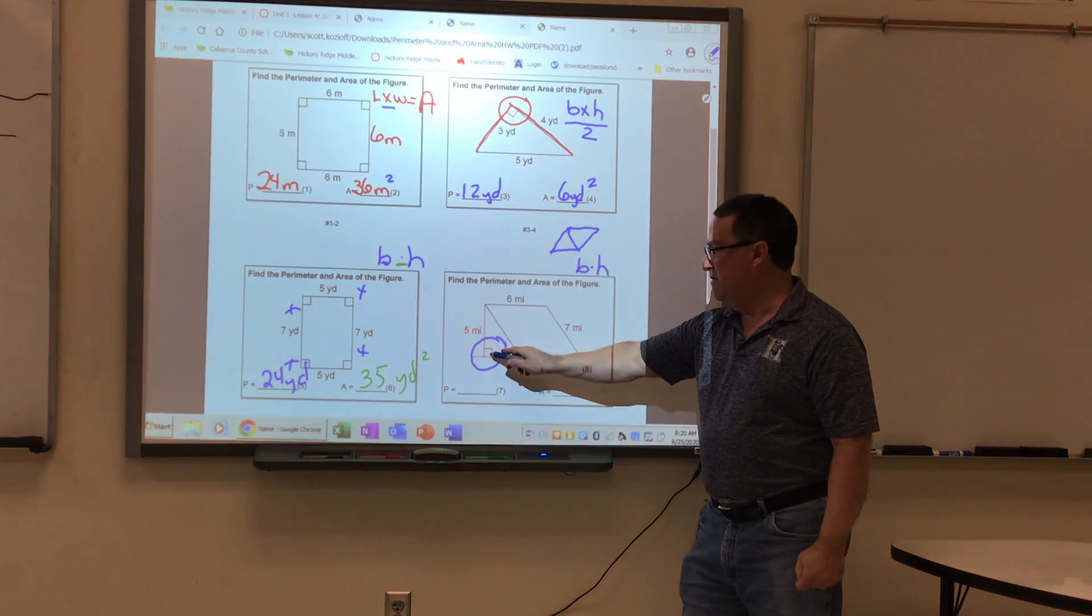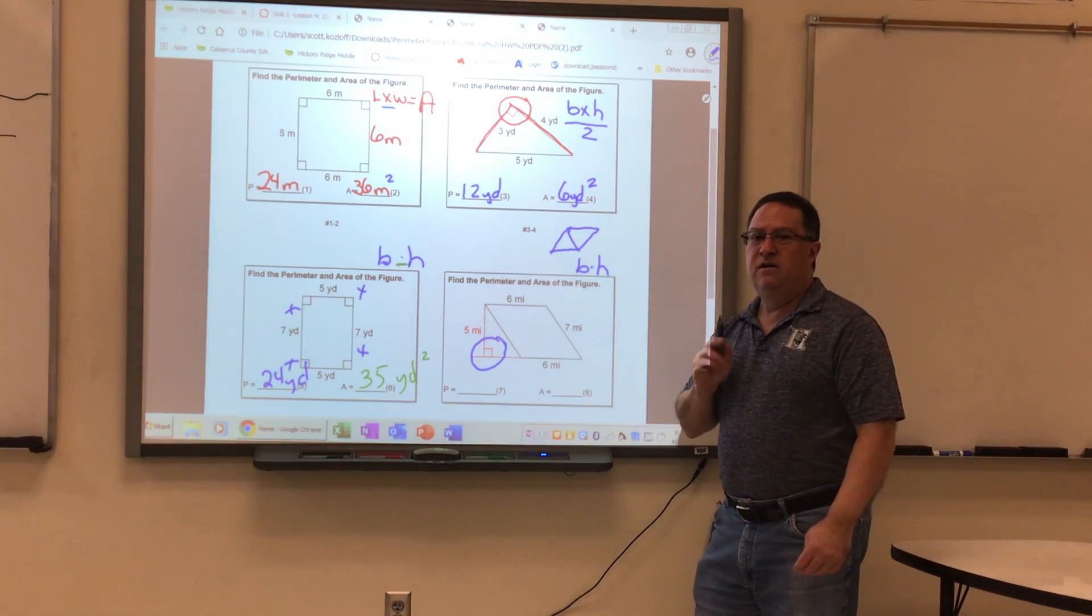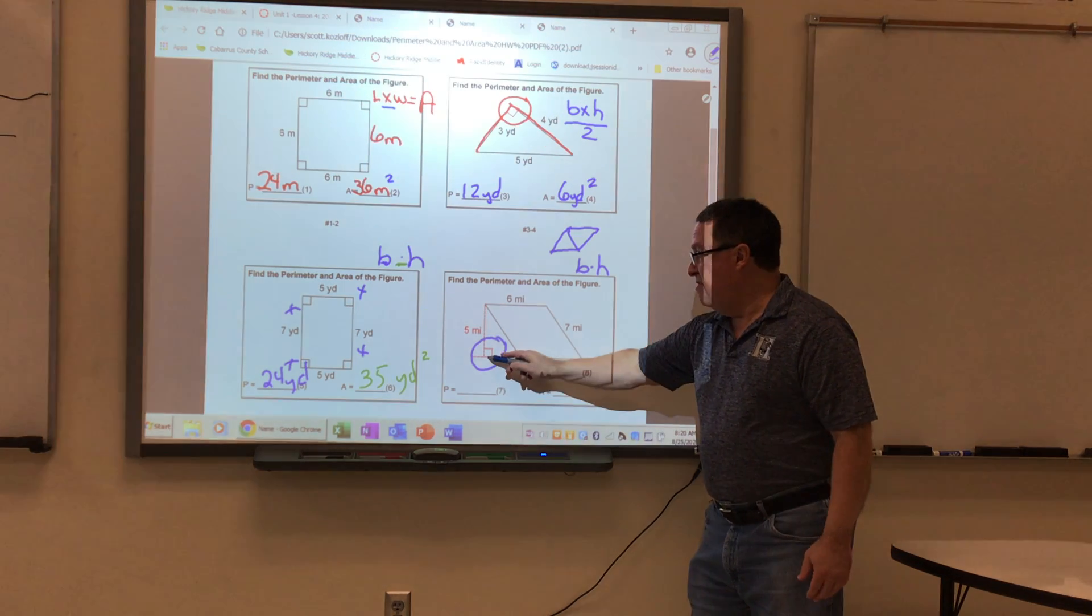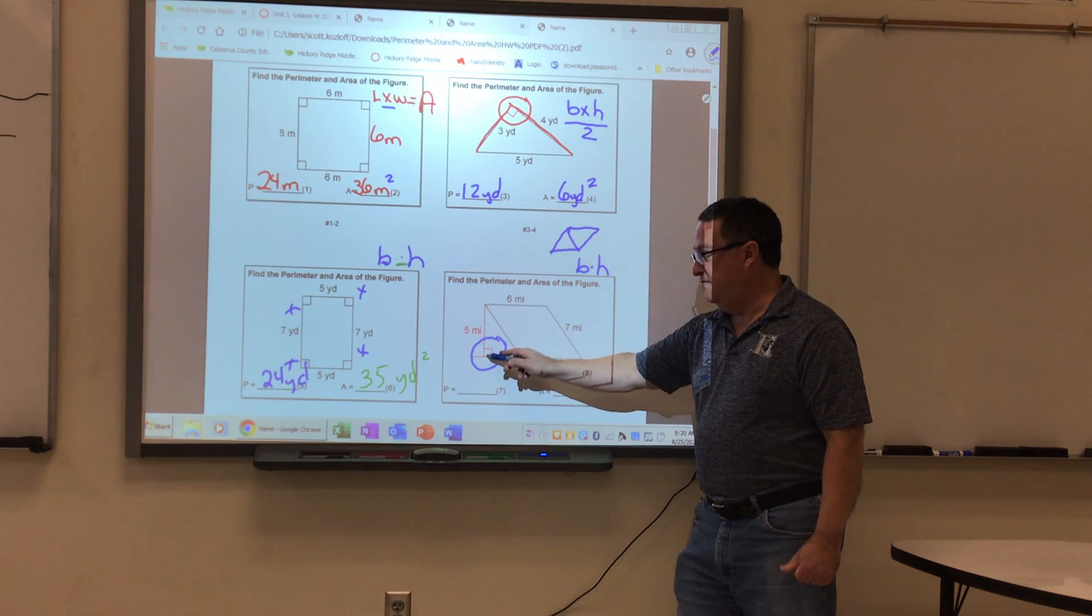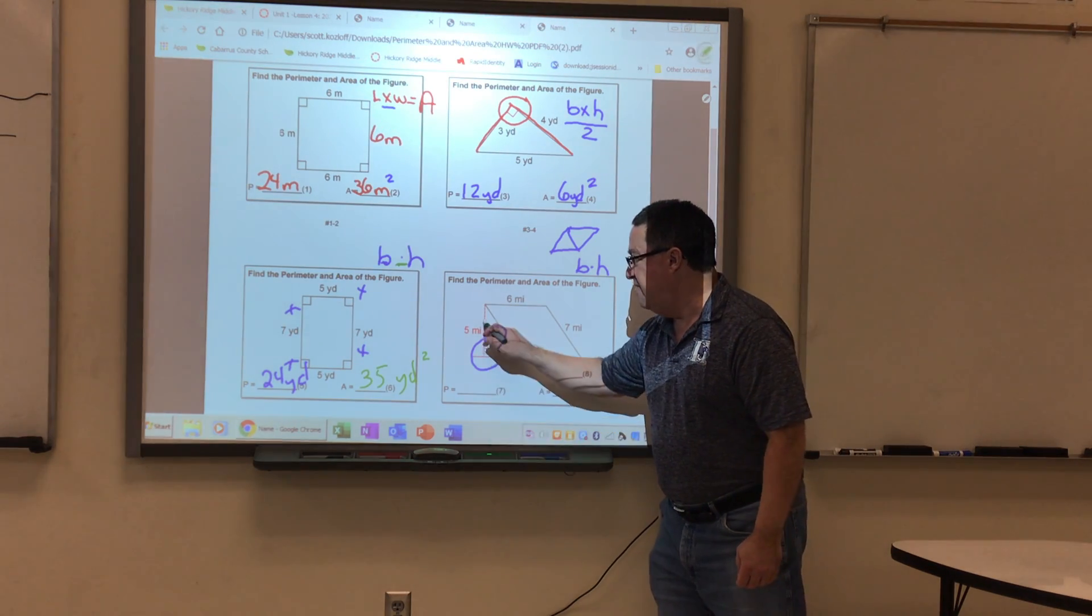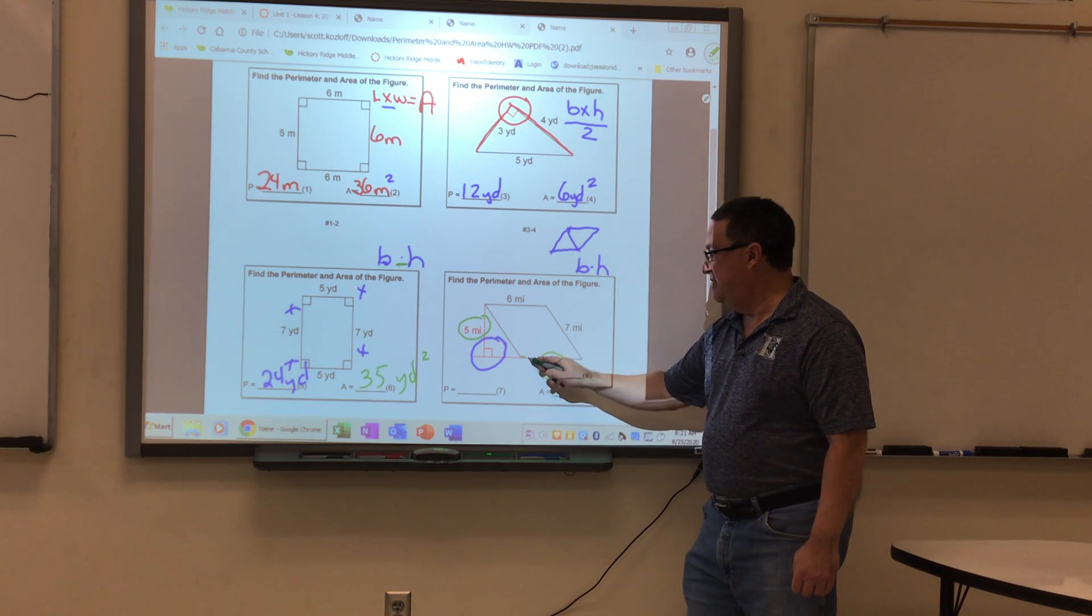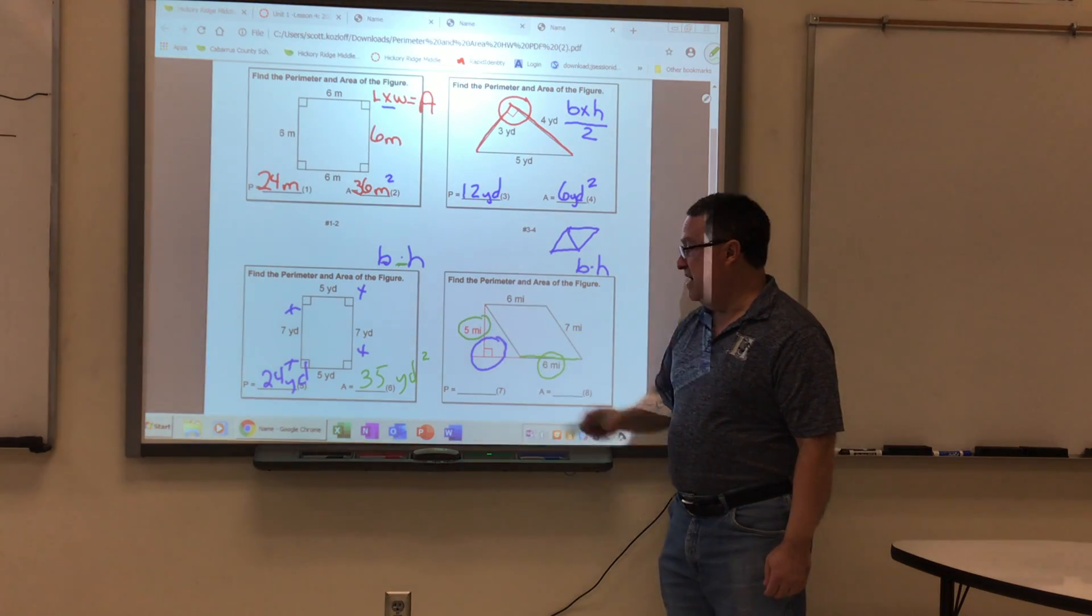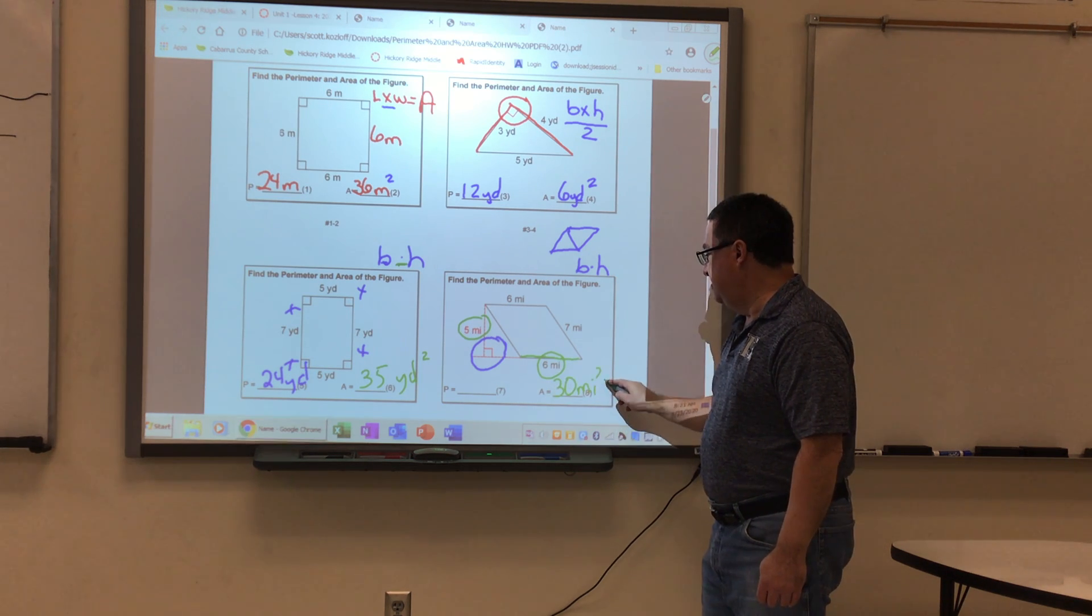Once again, remember to look for that right angle symbol because those are the two lines you would use to actually multiply for the area. So this little dotted line doesn't mean anything. It's invisible, just like this five-mile line is invisible. But I'm going to use this number for my height, and I'm going to use this number since that's the base I'm using to find my height. So six times five is 30, and there we have 30 miles squared.